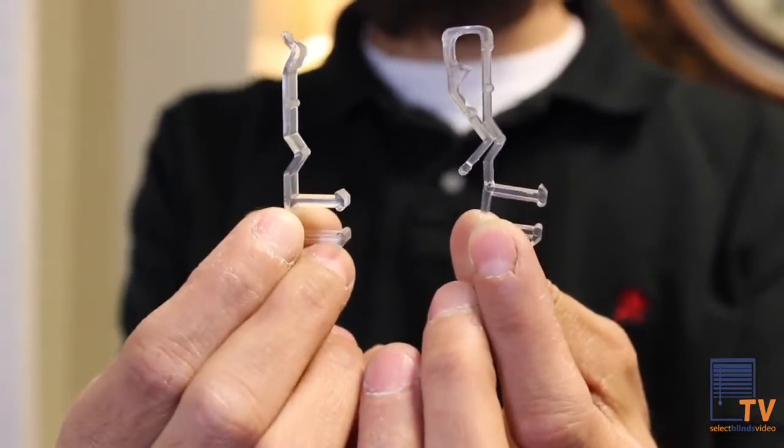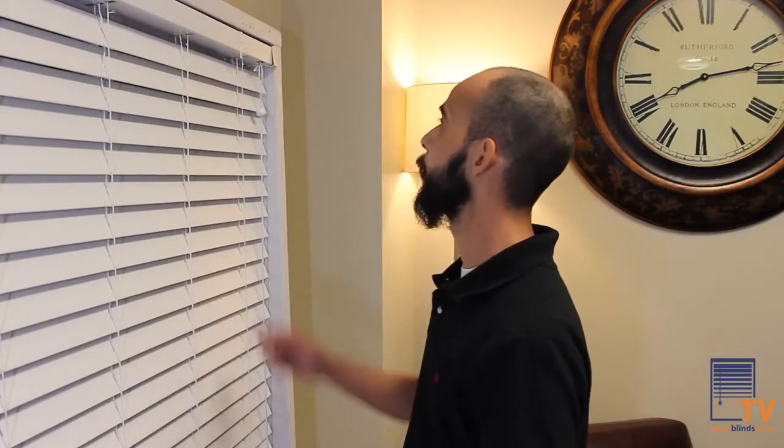The first thing you're going to want to do is take down the balance because you have a broken balance clip. Depending on if both of them are broken or one, that will determine how many you're going to need.